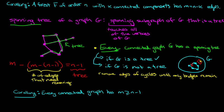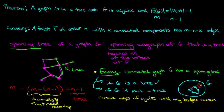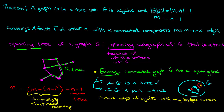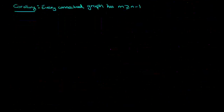We've already seen that a tree is connected and acyclic, and we had a theorem that a graph is a tree if and only if it's acyclic and has m equal to N minus 1. Now we're going to look at a very similar theorem: a graph G is a tree if and only if it is connected and has M equal to N minus 1 — basically the same theorem but with the word 'acyclic' replaced by 'connected.'